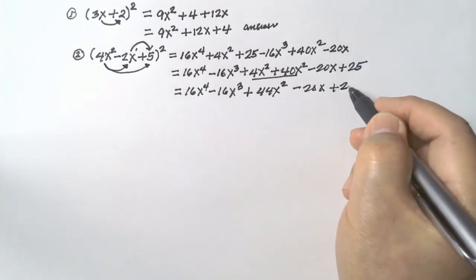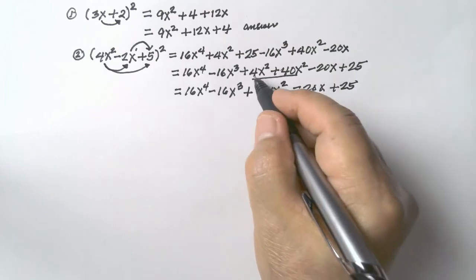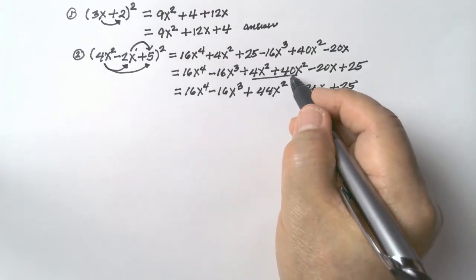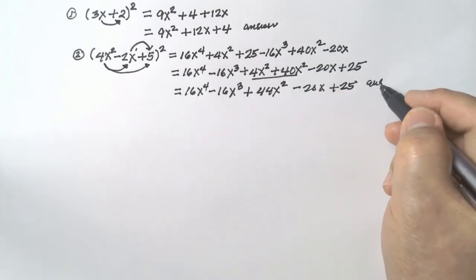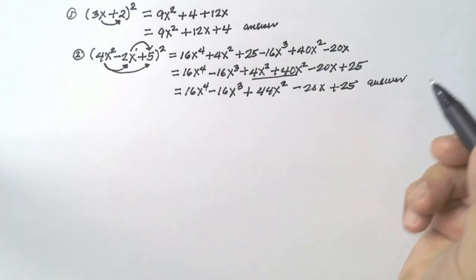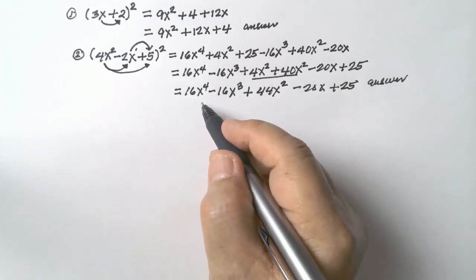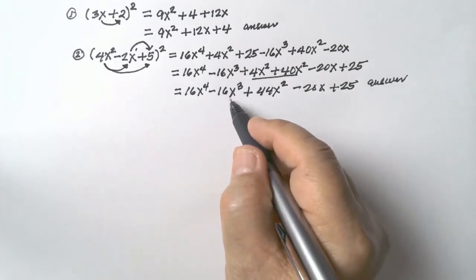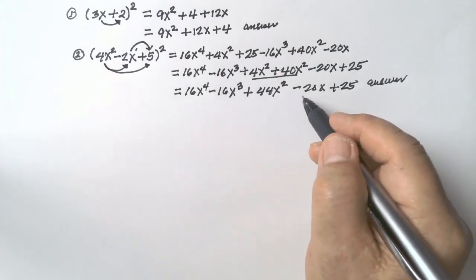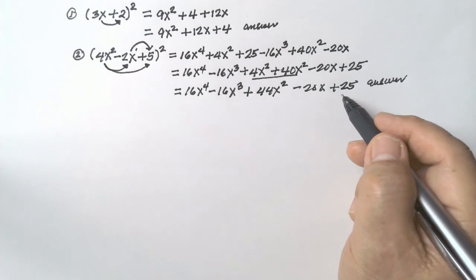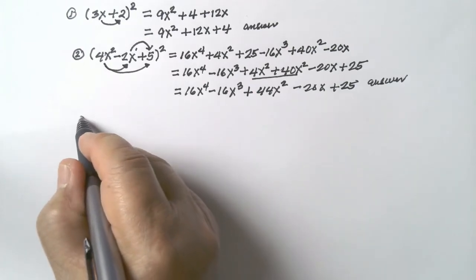Minus 20x plus 25. 44 because 4 plus 40 is 44, and then x squared. So the final answer is 16x to the exponent of 4 minus 16x cubed plus 44x squared minus 20x plus 25.